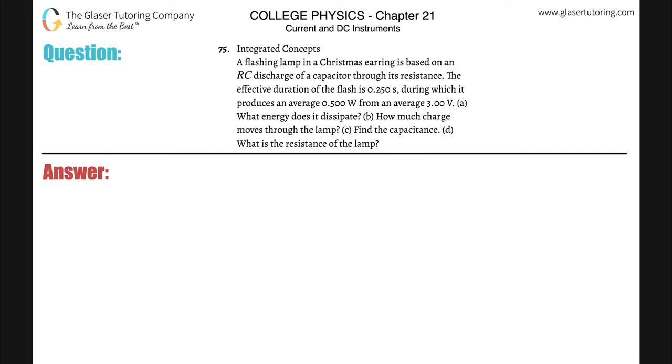Number 75, integrated concepts. A flashing lamp in a Christmas earring is based on an RC discharge of a capacitor through its resistance. The effective duration of the flash is 0.25 seconds during which it produces an average of 0.5 watts from an average 3 volts.